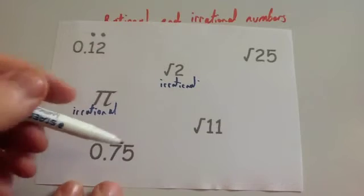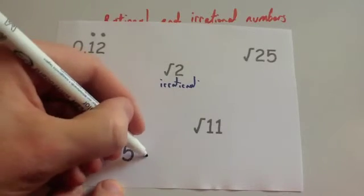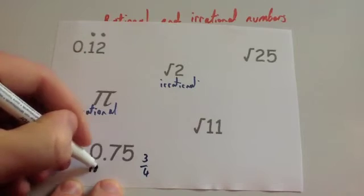0.75, well, that's obviously 3 quarters. That can be expressed as a fraction, so that is rational.